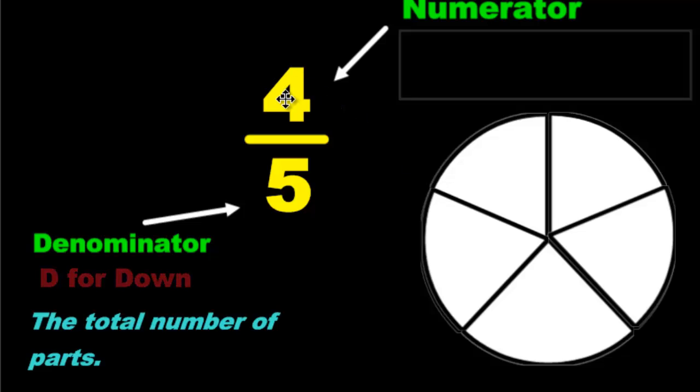Now, the number on the top tells me how many of those pieces I have to select. Why would I select them? I would select them. If it was a pizza, I'd select them to eat them. We're just going to select them for some reason, for some purpose.